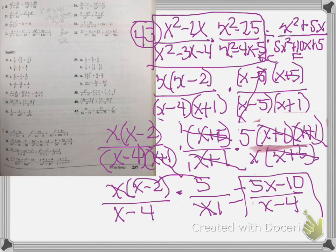Your final answer is 5x minus 10 over x minus 4. I know that was a lot of work, but if you just take it step by step, just as I've shown you here, and make changes as you go, you will be fine.